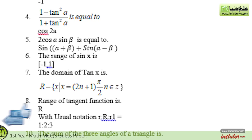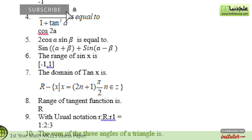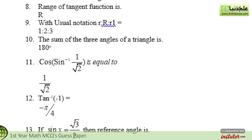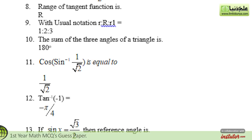The seventh statement is: the domain of tan x is — the correct option is shown on the screen. The eighth statement is: the range of the tangent function is — the correct option is R. The ninth statement is: with usual notation, R:R₁:R₂ equals — the correct option is 1:2:3. The tenth statement is: the sum of the 3 angles of a triangle is — the correct option is 180 degrees.